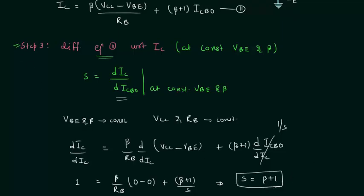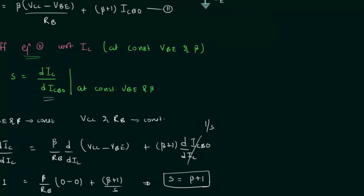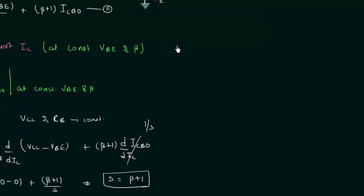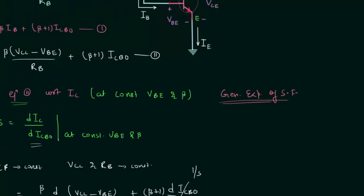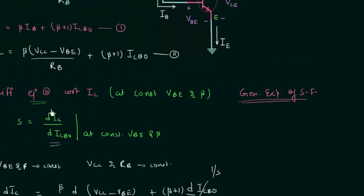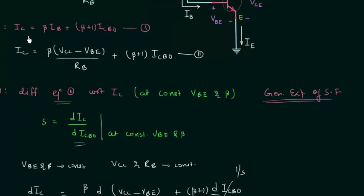We will now find the general expression of the stability factor. For this purpose I will differentiate equation one: IC = β·IB + (β+1)·ICBO. To obtain the general expression I will differentiate this equation with respect to IC keeping VBE and β constant. This equation is true for all biasing schemes.